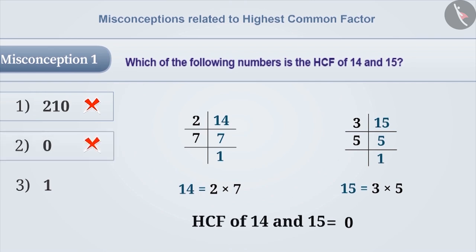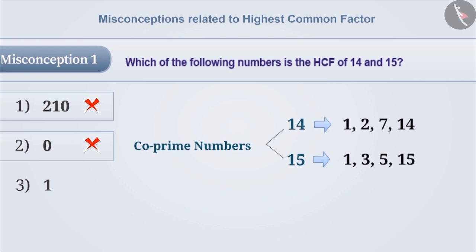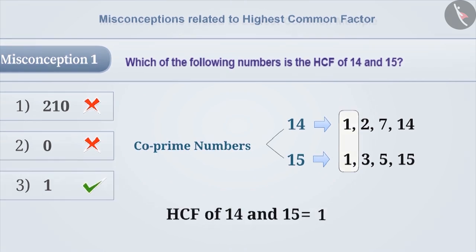This is a misunderstanding. The correct understanding is that 14 and 15 are co-prime numbers. That means, among the factors of these two numbers, 1 is the only common factor. Therefore, HCF of 14 and 15 is 1. So, option 3 is the correct answer.